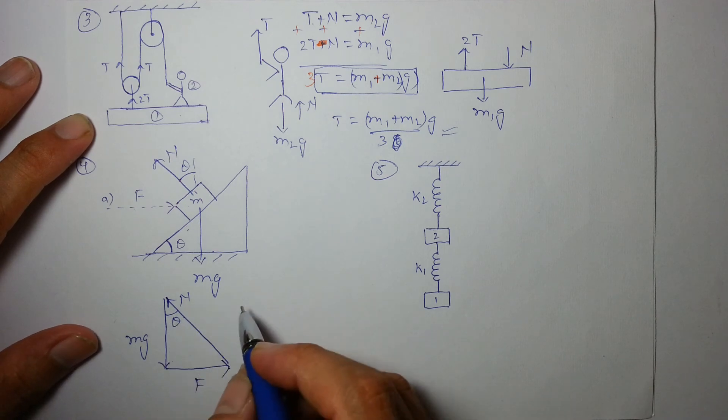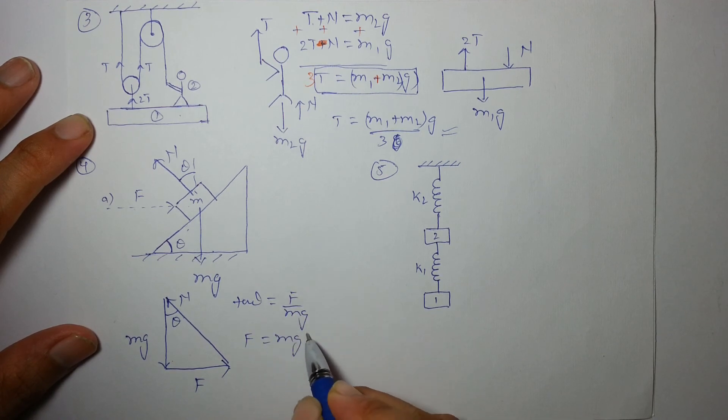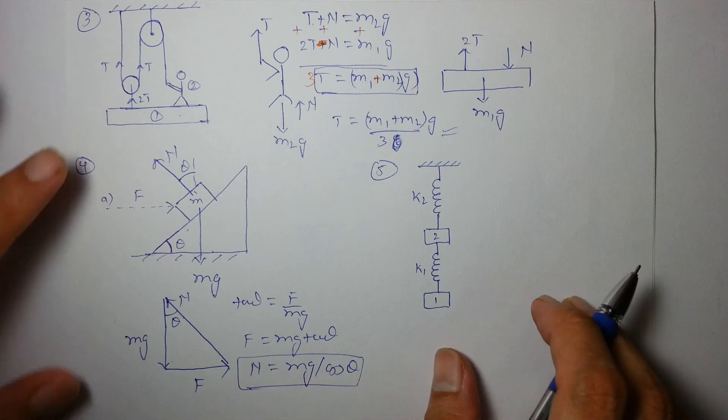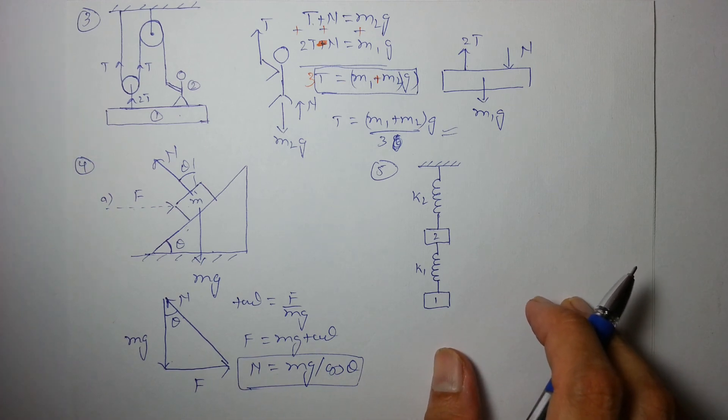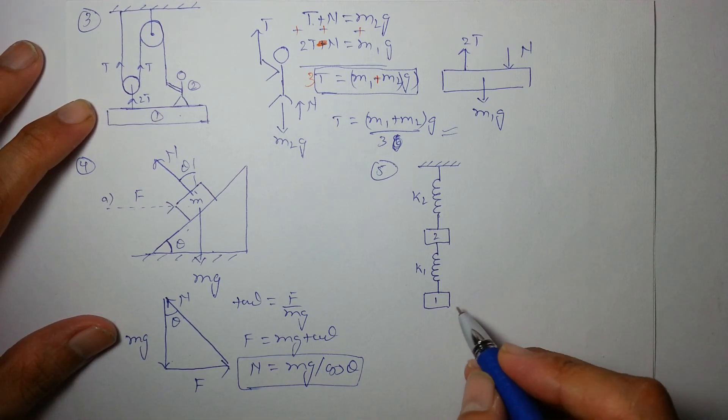So, by using simply tan θ as f by mg. I can say f is nothing but mg tan θ and I can also find n. In terms of mg, for example, n is mg by cos θ in this case. Generally, n is mg by cos θ in the next example and the last one.